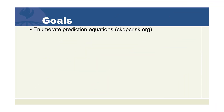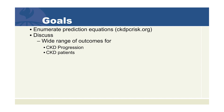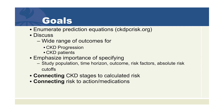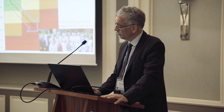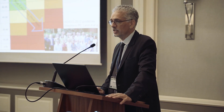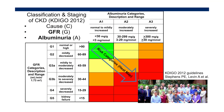The goals are to enumerate prediction equations and focus on the ones we've posted on ckdpcrisk.org, to discuss the wide range of outcomes — I think too often we've focused on too narrow a range — and to emphasize the importance of specifying variables, and then importantly connect the stages to calculated risk and to actions and medications. The emphasis is that we've done well with staging, but staging is the beginning, not the end. We need to use GFR and albuminuria to guide things, then individualize to the patient. You can do a lot of that through risk equations.